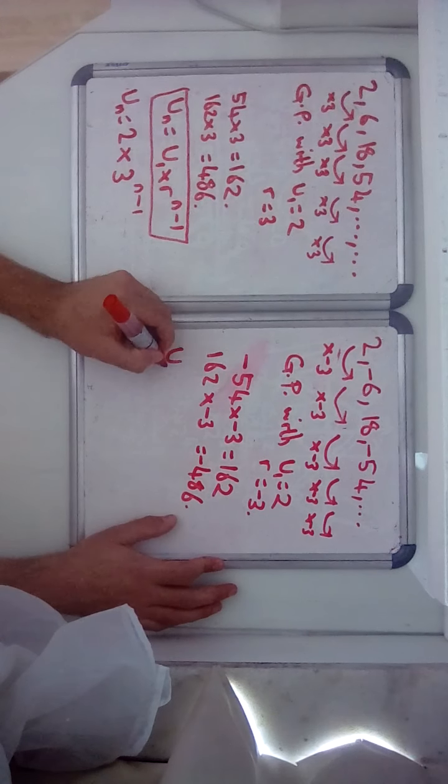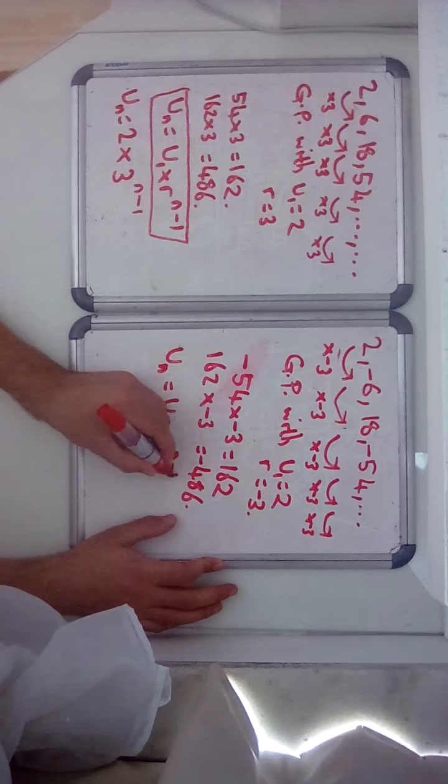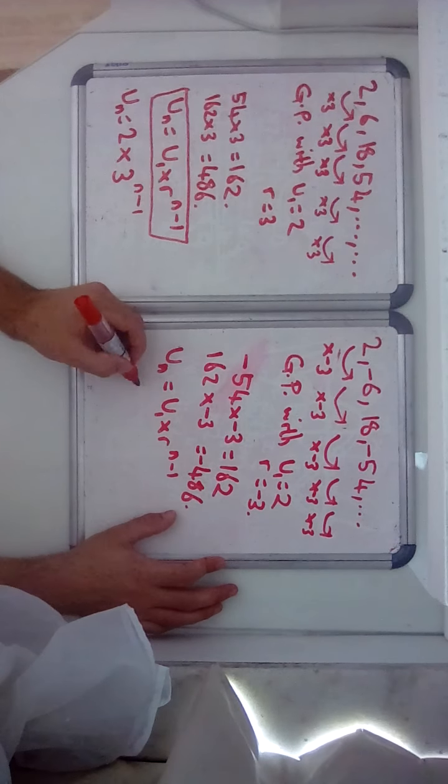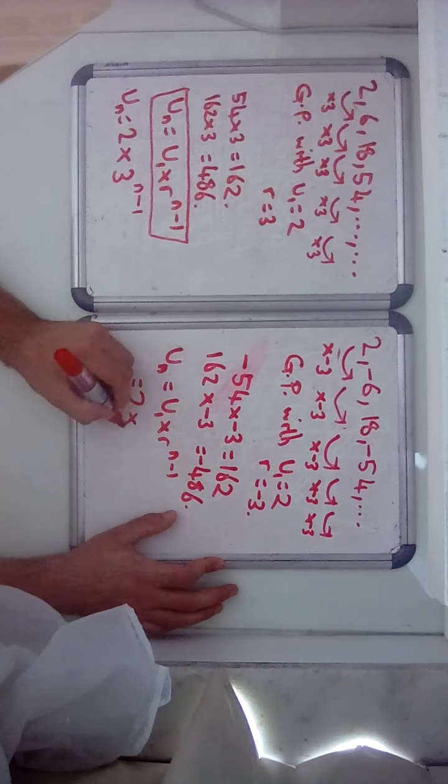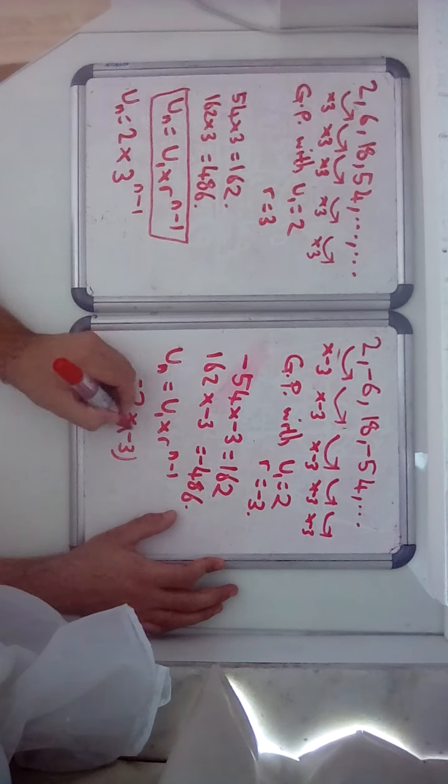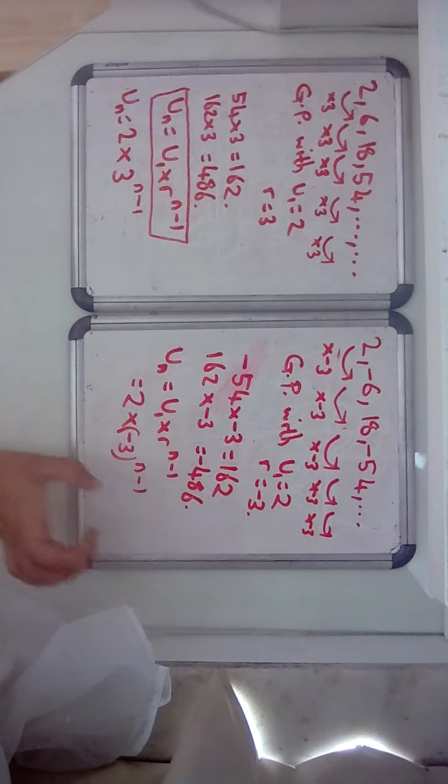Un is still u1 times r to the power n minus 1. So in this case it's 2, u1 was 2, times r minus 3. You're going to need a bracket to the power n minus 1, we're raising minus 3 to that power.